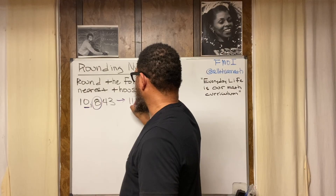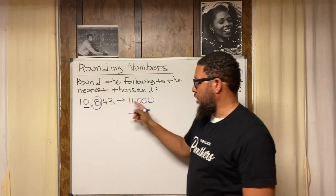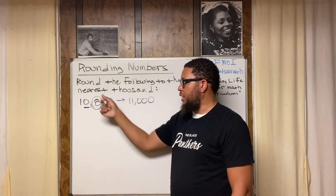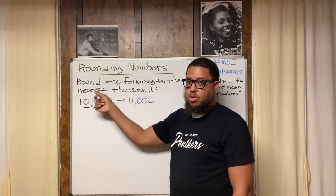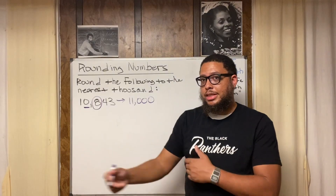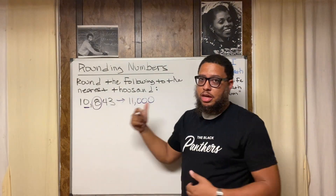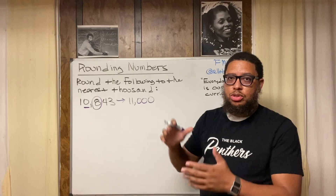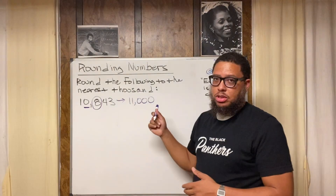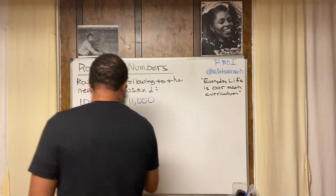The answer is 11,000. When we round, 10,843 is nearer or closer to 11,000 than it is to 10,000. You've got two choices — go up to 11,000 or go down to 10,000 — and 11,000 is closer. Now let's do it a different way with a number line.